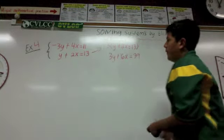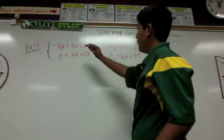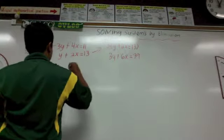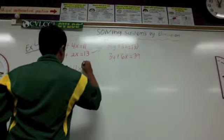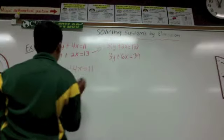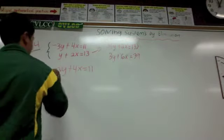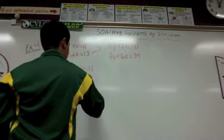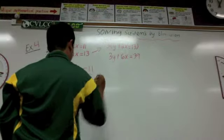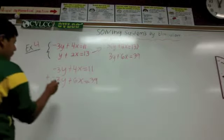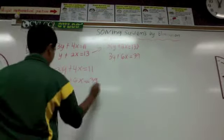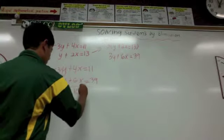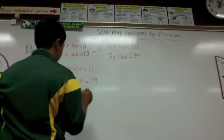We're going to put that in place of the second equation. So it's going to be negative 3y plus 4x equals 11, and then we add them both: 3y plus 6x equals 39. The y's cancel out.